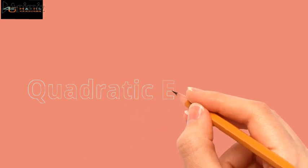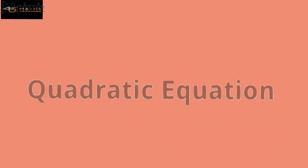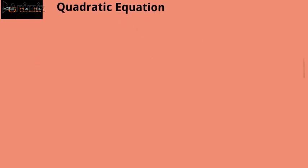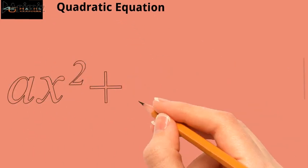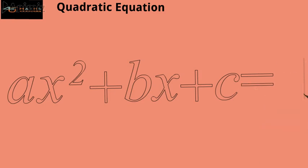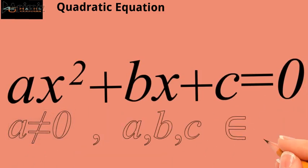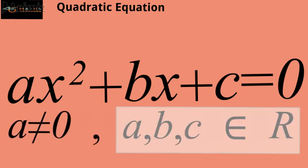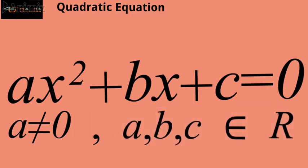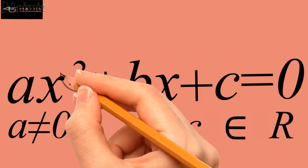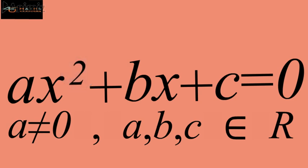As we are all familiar with the quadratic equation, that is ax squared plus bx plus c is equal to 0, where a is not equal to 0, and a, b, c — the constants involved in the equation — belong to the set of real numbers. 'Quad' means square; the highest exponent in this equation is 2, which is why this equation is called a quadratic equation.